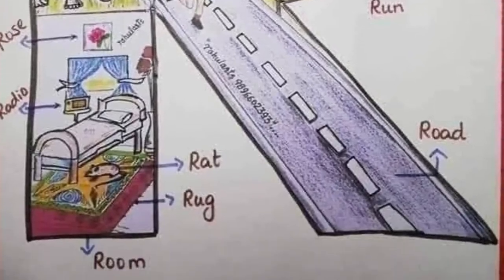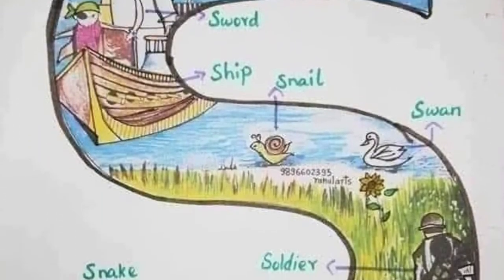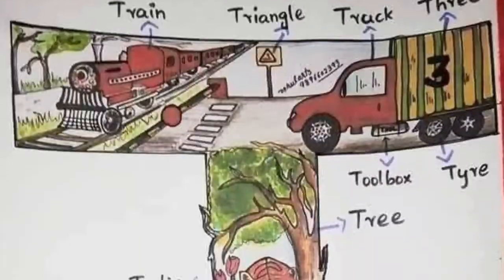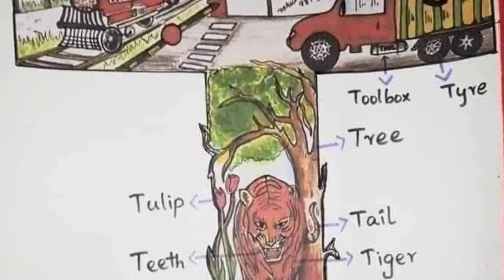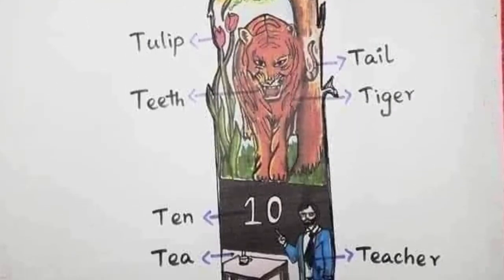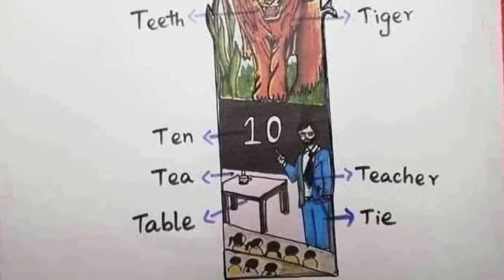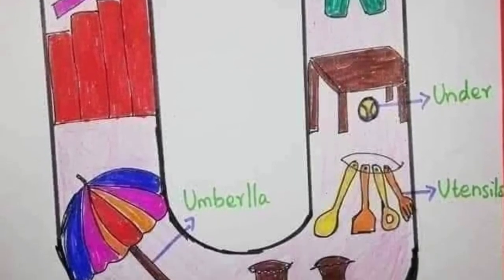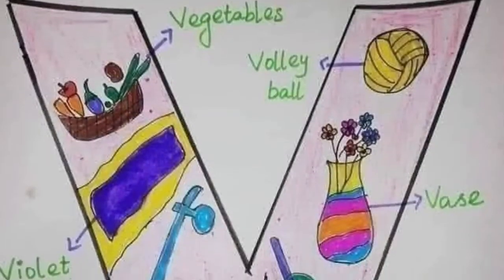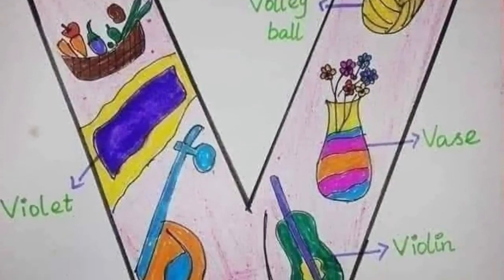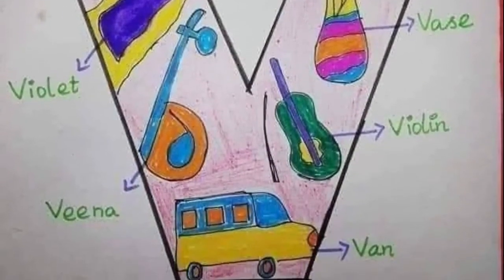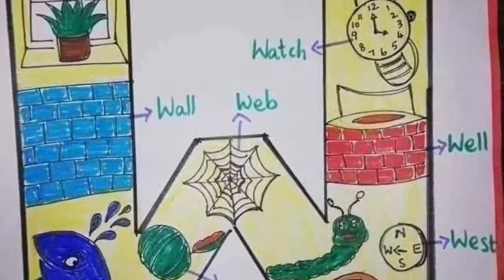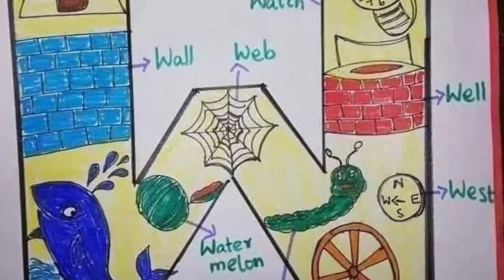S for ship, T for tree, U for uniform, V for band, W for bell.